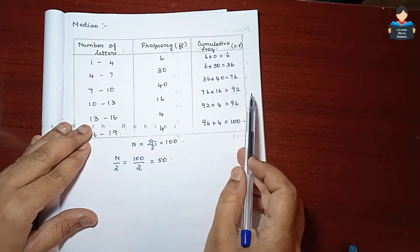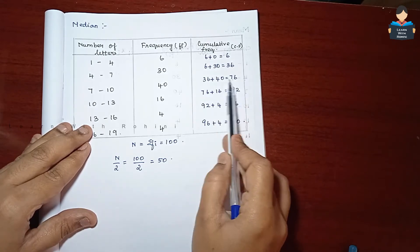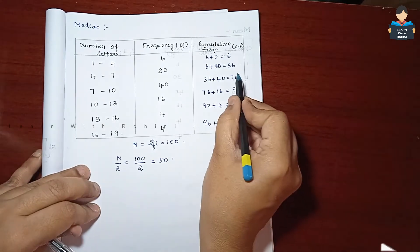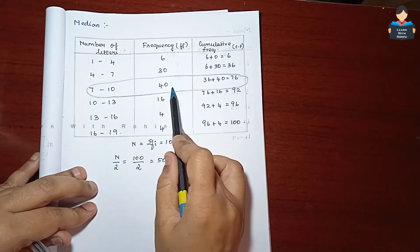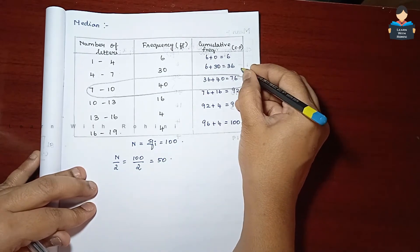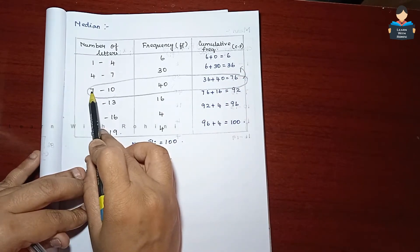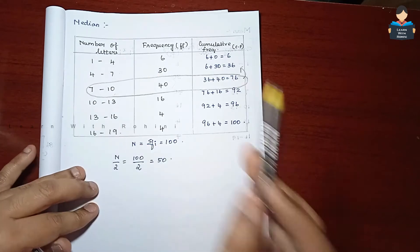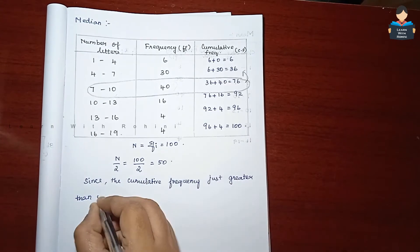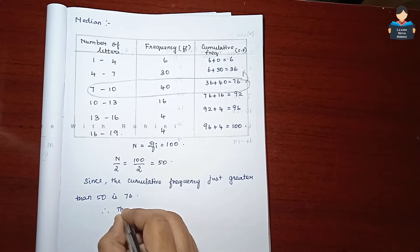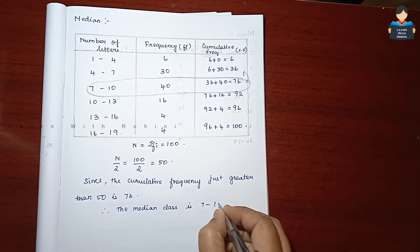So 50 is the nearest greater number. That's the corresponding class interval. So 7 to 10 is the median class. Frequency is F. CF before the median class is CFR. Since the cumulative frequency just greater than 50 is 76, therefore the median class is 7 to 10.